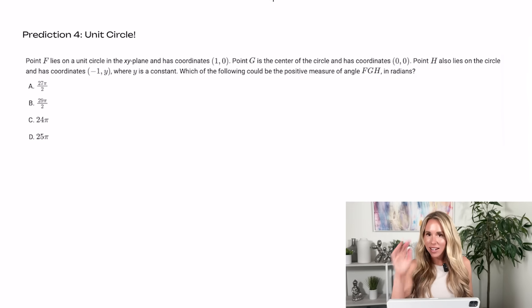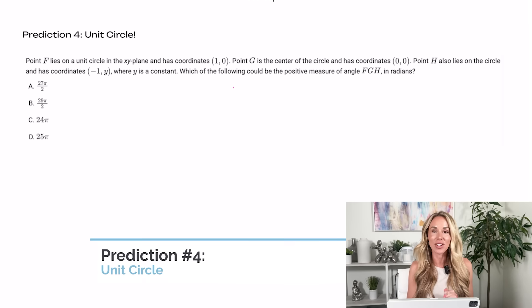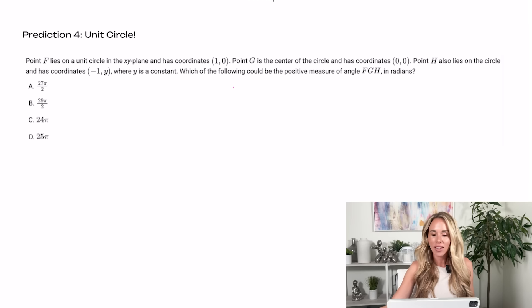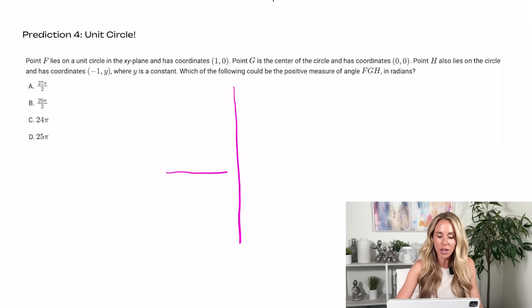All right, my fourth prediction, and this one is kind of an interesting one because it usually doesn't come up on the SAT. I think you're going to have a unit circle question on your test. Unit circle has just started to resurface. They released a new question to the question bank on unit circle. I heard it was on the June test, potentially. So let's talk unit circle. This one says point F lies on a unit circle. Well, first of all, you want to draw an XY coordinate plane to map this out. So let's do that. So point F is at 1, 0. Okay.